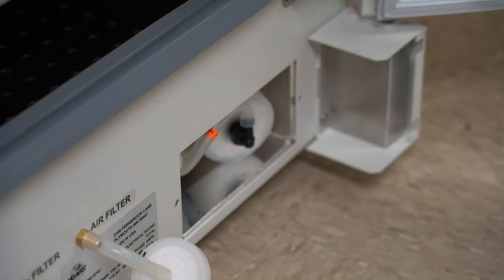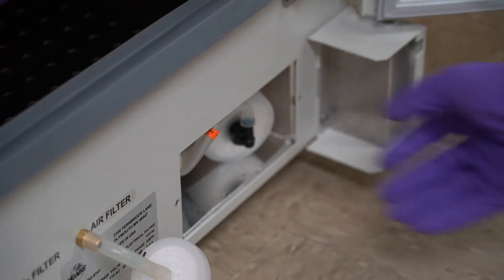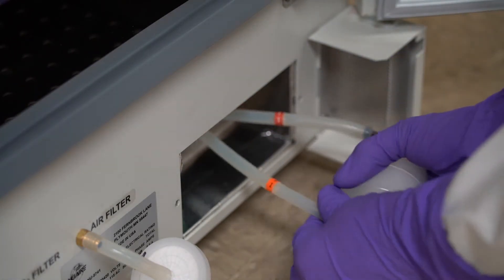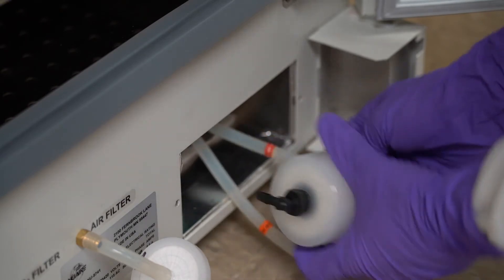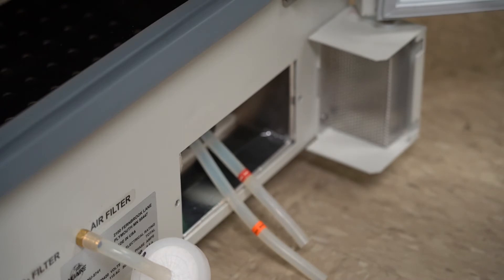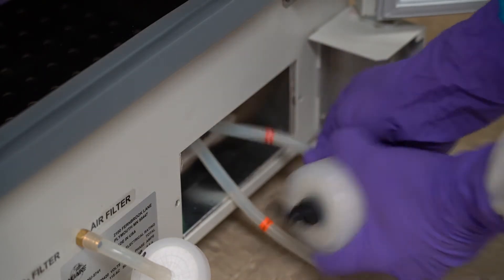Pull out the capsule HEPA filter and inspect it for discoloration that indicates it should be replaced. If necessary, remove the old filter from the tubing and connect it to a new one. Be sure to install the new filter with the correct orientation.